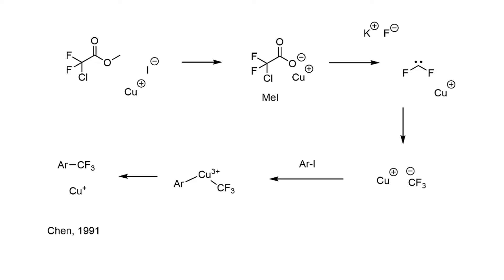As for how this reaction works, they were following a report published by Chen in 1991, a quite nice paper with a lot of mechanistic detail. They propose a catalytic cycle: starting with copper(I) iodide and methyl chlorodifluoroacetate in the reaction mixture, the iodide acts as a nucleophile, attacks the methyl group of the ester in an SN2 reaction, and generates one equivalent of methyl iodide as a byproduct, affording a carboxylate anion in the presence of copper(I).